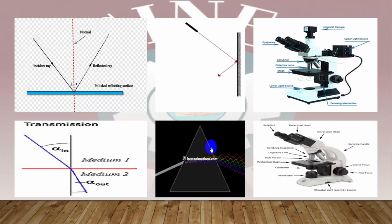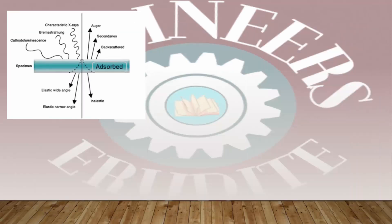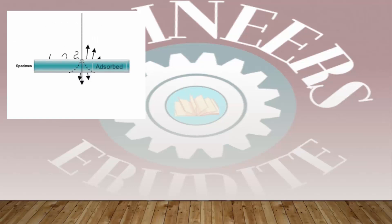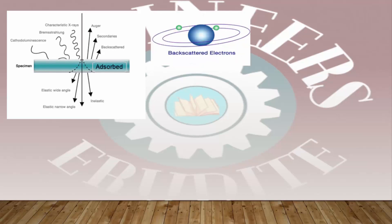As the electron beam interacts with the metals, as I have shown in our previous lecture, there are possibilities to generate several other electrons and x-rays. As you can see in this animation, in the scanning electron microscope we can use backscattered electrons.